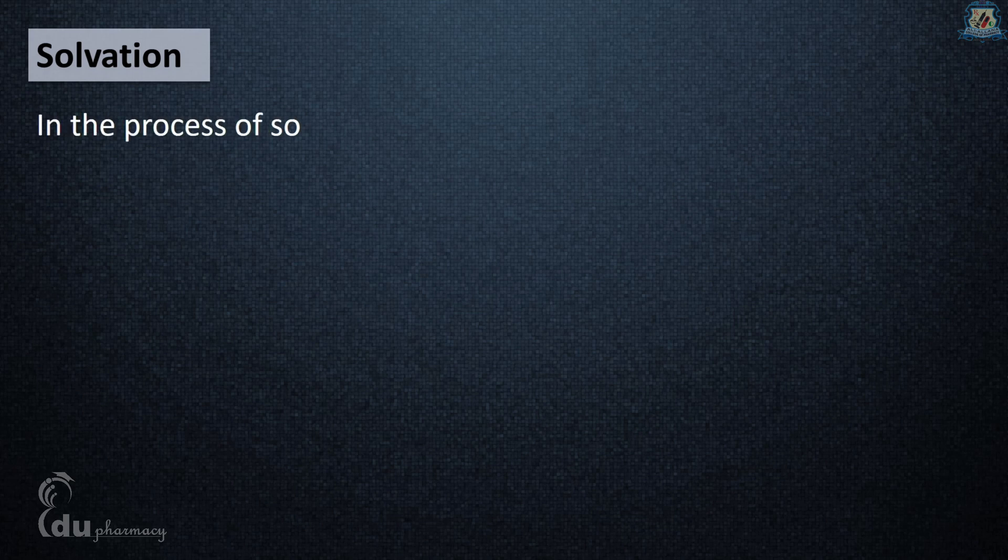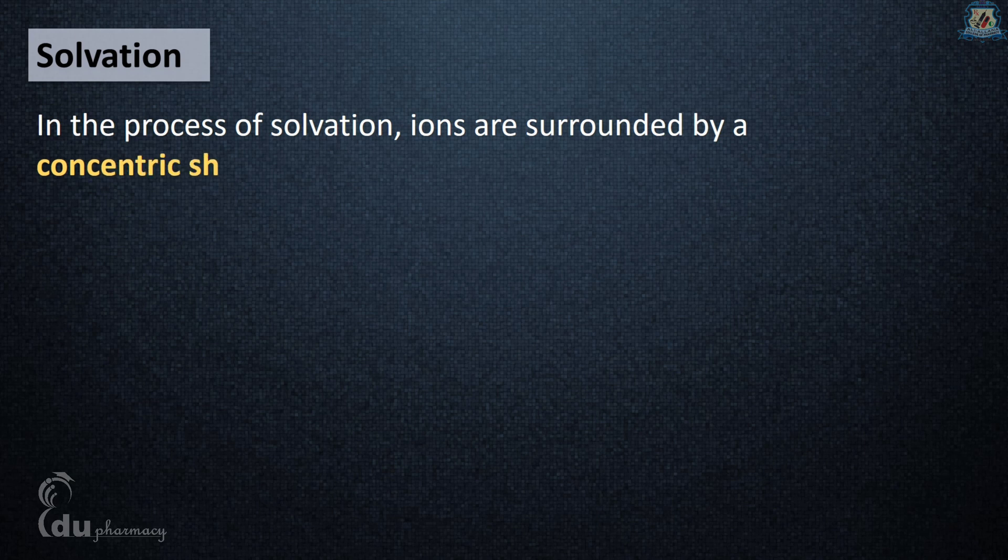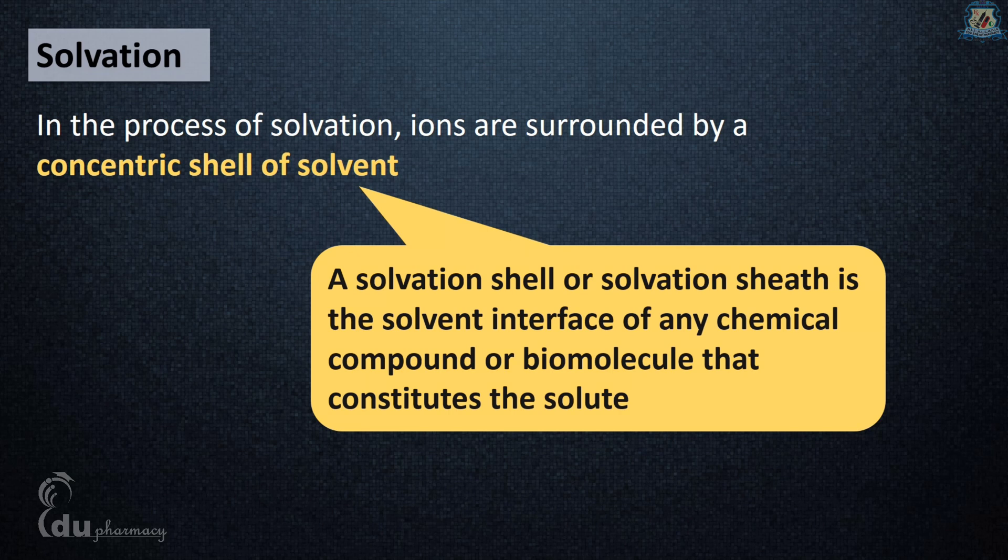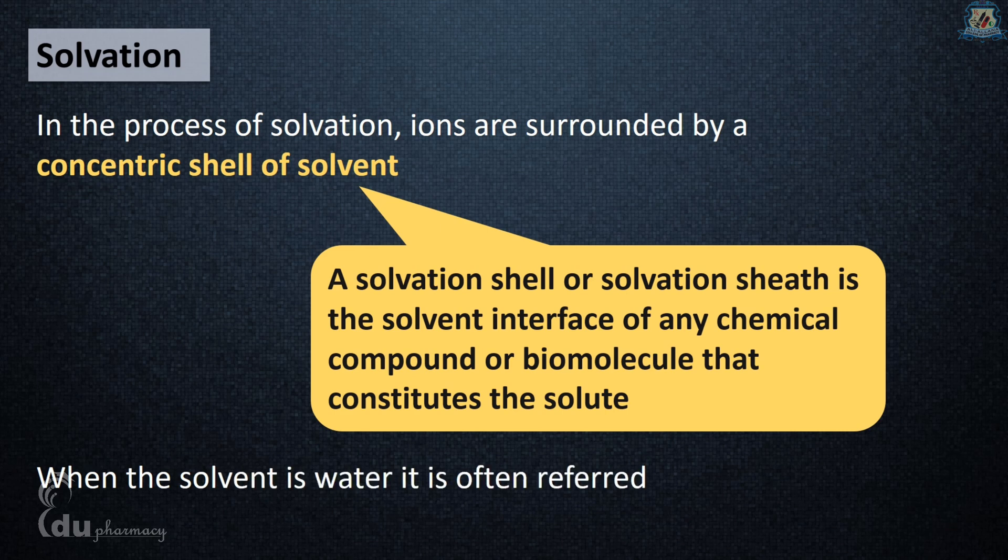In the process of solvation, ions are surrounded by a concentric shell of solvent. The concentric shell is the solvation sheet, which is the solvent interface of any chemical compound or biomolecule that constitutes the solute. When the solvent is water, it's referred to as a hydration shell or hydration sphere.